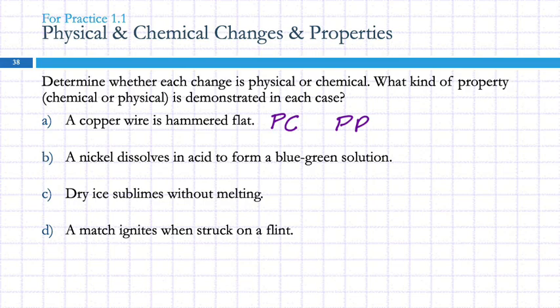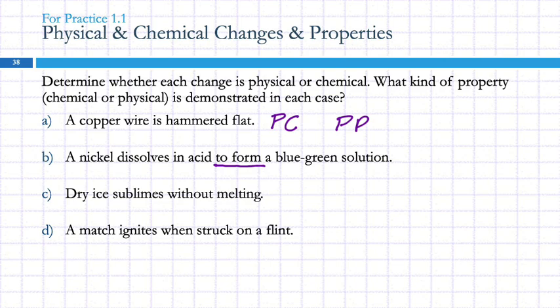A nickel dissolves in acid to form a blue-green solution — this one's a little tricky. We just talked about sugar dissolving in water as a physical change. But here, dissolving in acid says 'to form' something new. That means it's making a new substance. The nickel is reacting with the acid and making a new substance — so it's a chemical change and a chemical property.